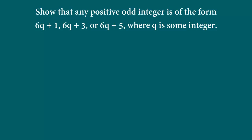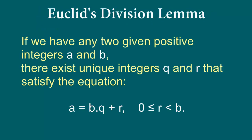So let's find out what Euclid's division lemma is and how we can use it to solve this. In our earlier videos we learned in detail about what Euclid's division lemma is. It simply states that if you have two positive integers a and b, then there must exist unique integers q and r such that a equals b times q plus r, where r is greater than or equal to 0 and less than b.